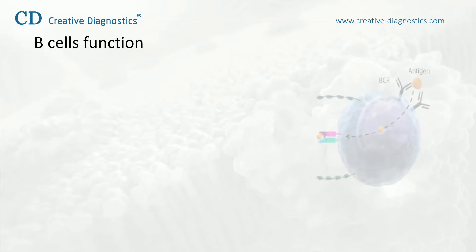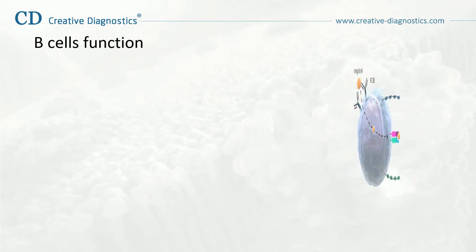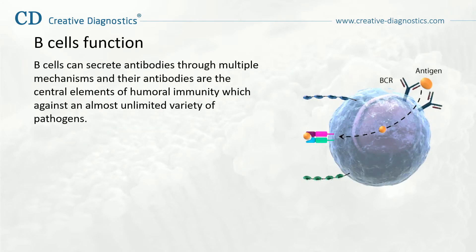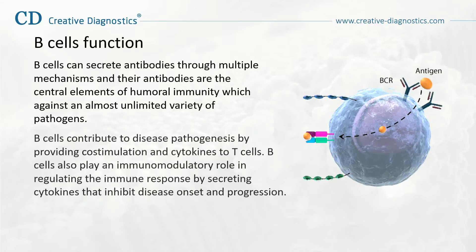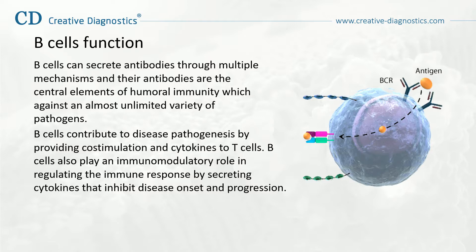Let's further learn about B-cell function. B-cells can secrete antibodies through multiple mechanisms, and their antibodies are the central elements of humoral immunity, which acts against an almost unlimited variety of pathogens. B-cells contribute to disease pathogenesis by providing costimulation and cytokines to T-cells, and also play an immunomodulatory role by secreting cytokines that inhibit disease onset and progression.